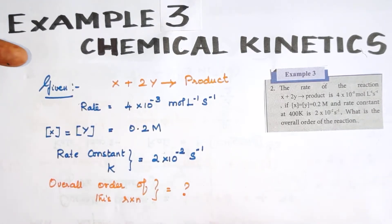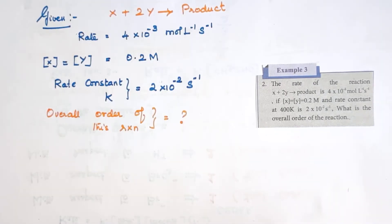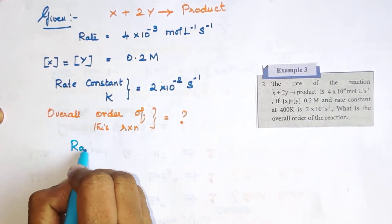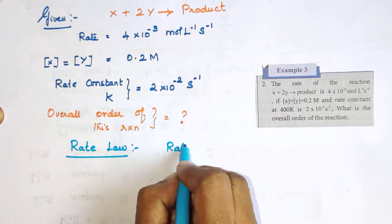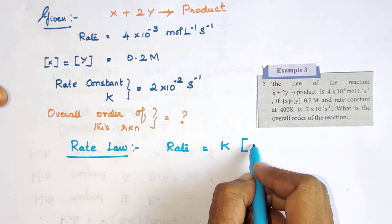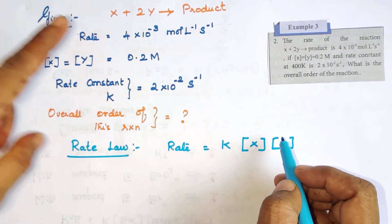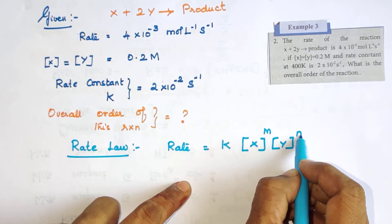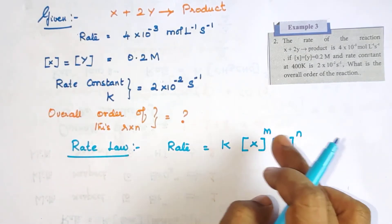Rate, concentration of the reactants, rate constant, and order — this is all related to one equation, which is the rate law. So rate is equal to rate constant k into concentration of the reactants raised to powers. These exponents are m and n, and m plus n gives the overall order. So we have to find m and n.